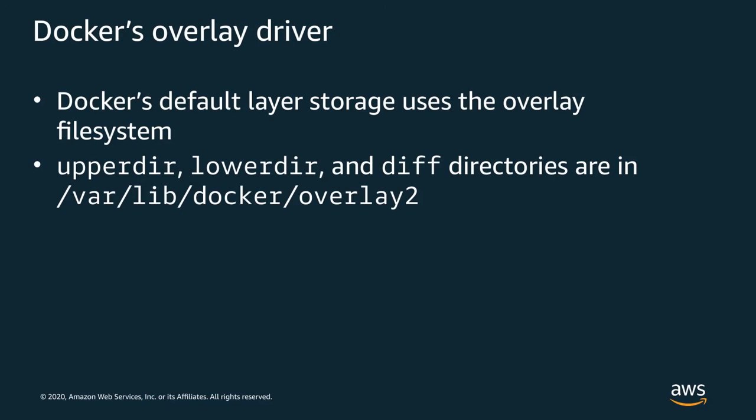Docker's default storage uses the overlay filesystem — that's also the default on Amazon Linux, in ECS, and in EKS. Docker creates its overlay mounts in /var/lib/docker/overlay2. You can see the storage and poke around at it there, though I generally would not recommend writing directly to it, as you can break the immutability of Docker images.